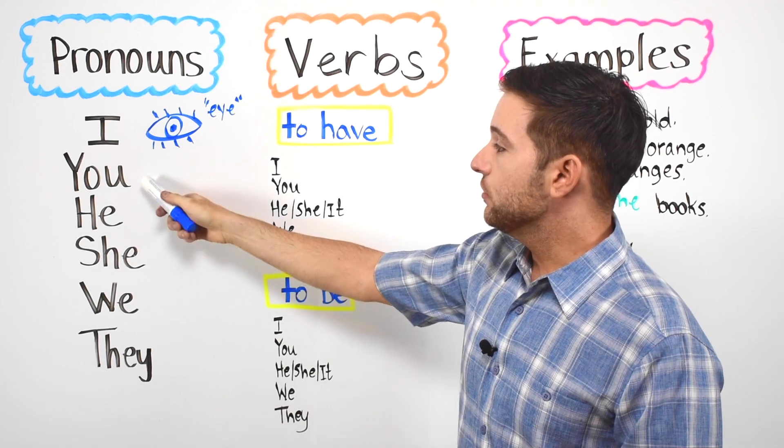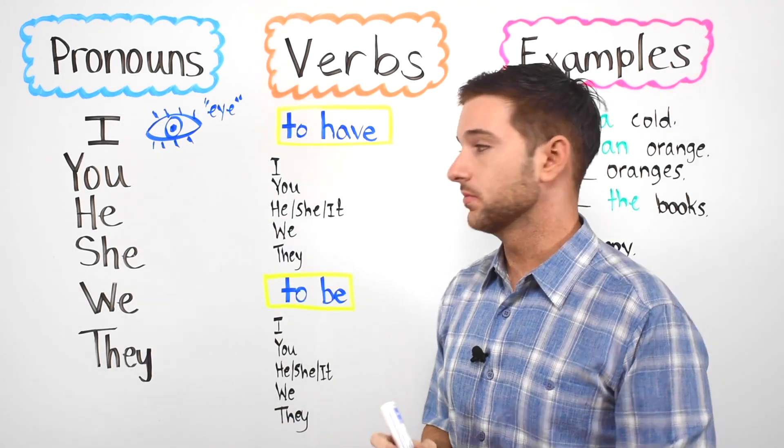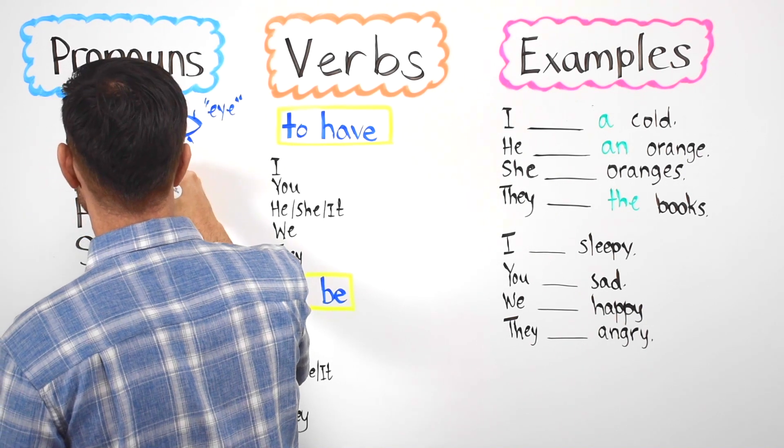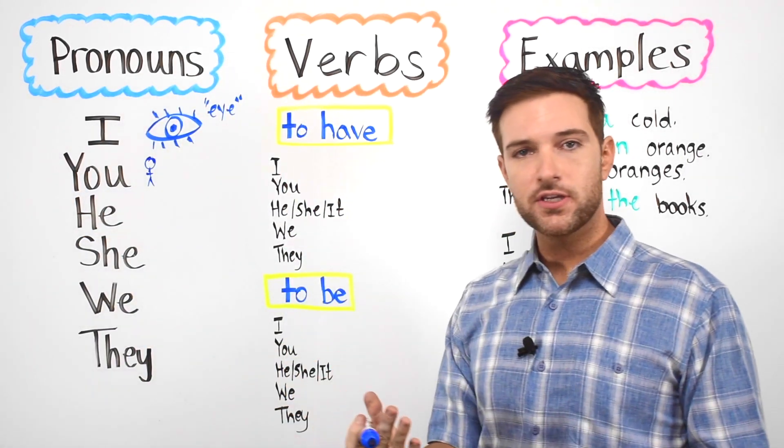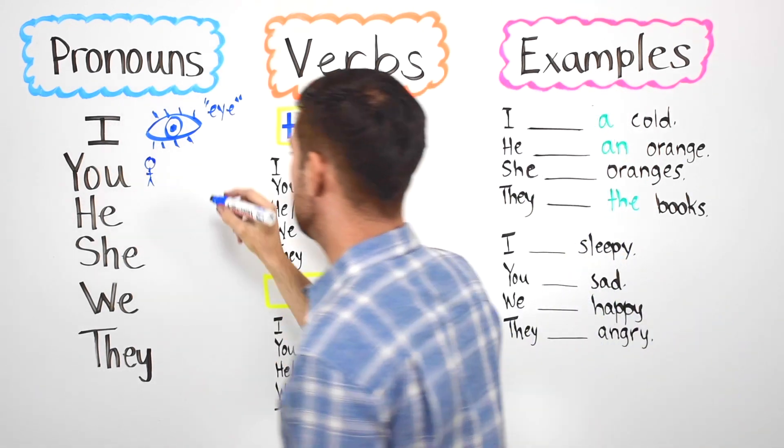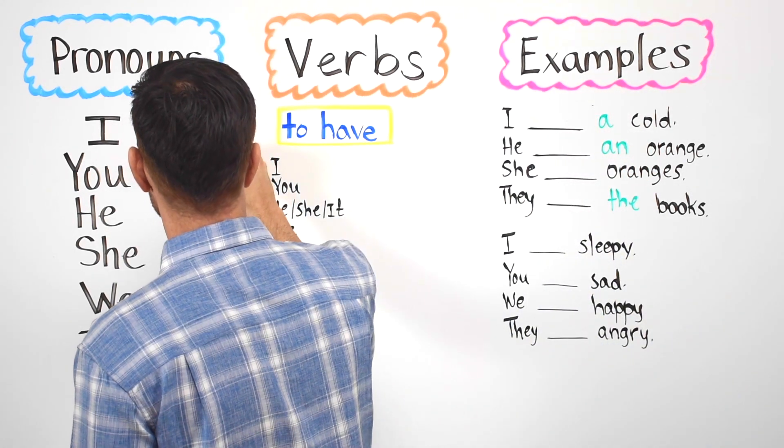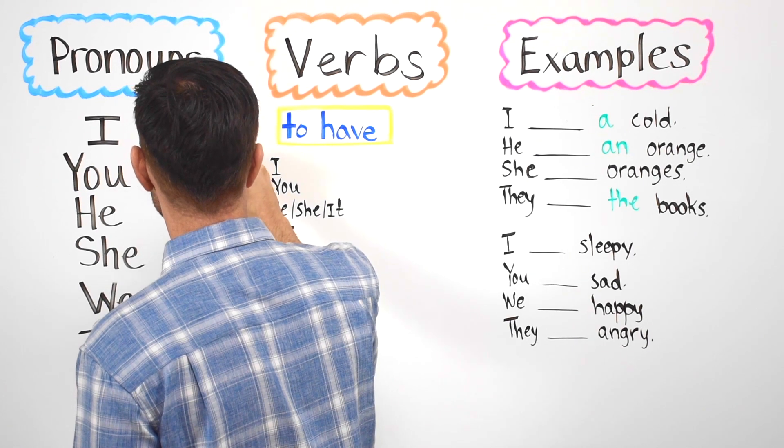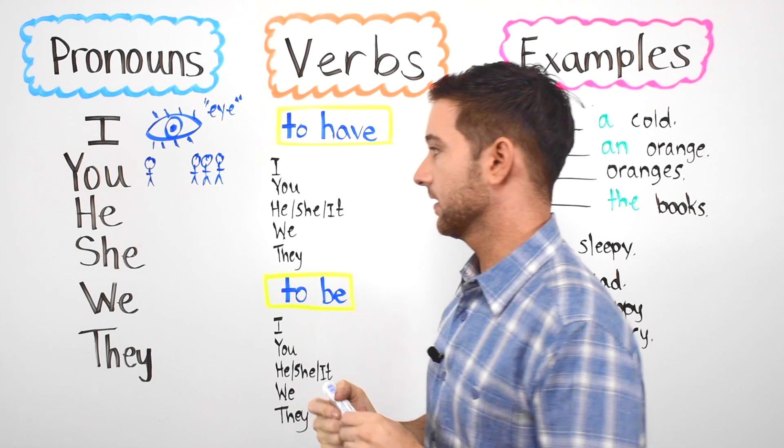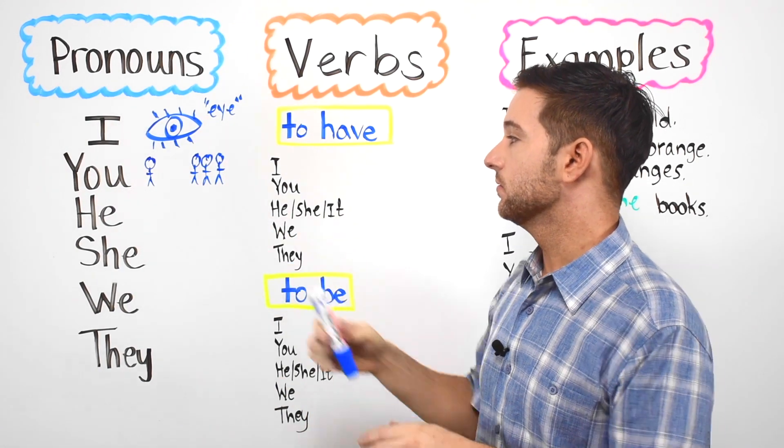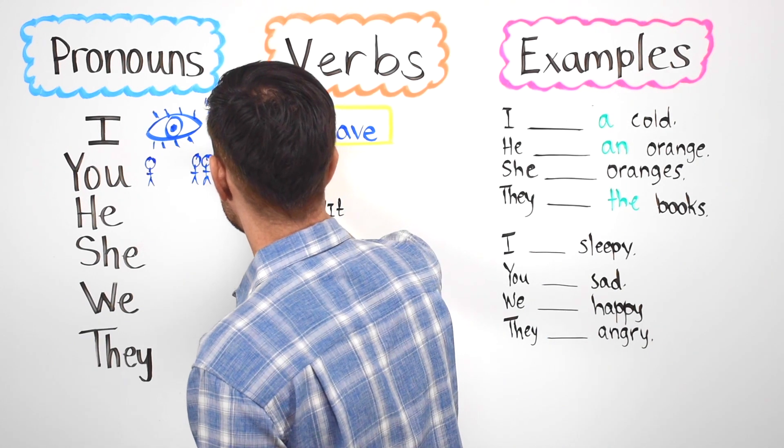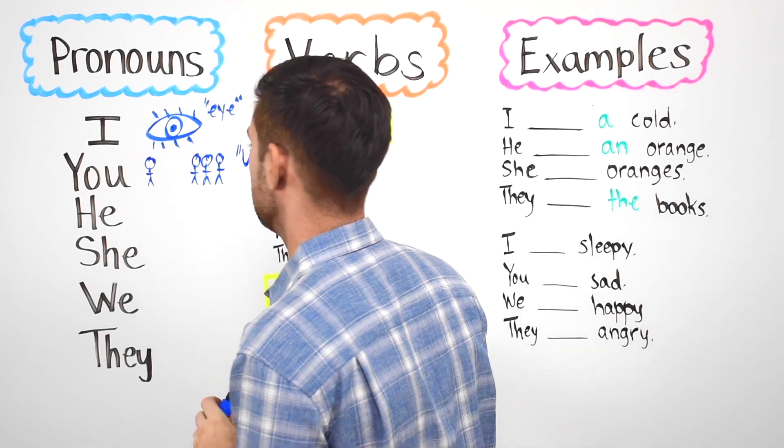Next we have you. We use you to talk about one person or you can use you to talk about more than one person. You can use you to talk about three people or four people or five people or even a group of people. You also sounds like the letter U.